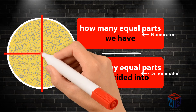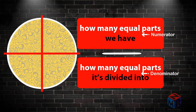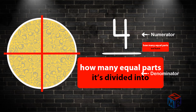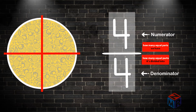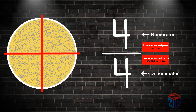We divided this pizza into 4 equal parts, so the number on the bottom will be 4. We still have 4 of those parts, so the number on top will also be 4. We have 4 out of 4 parts — the numerator is 4, the denominator is also 4, so the fraction is 4 over 4. We have the whole pizza.